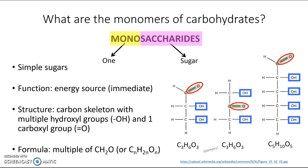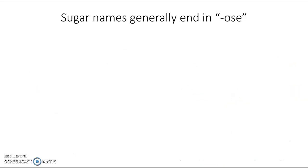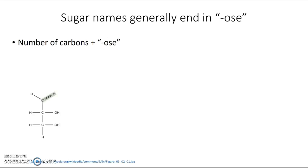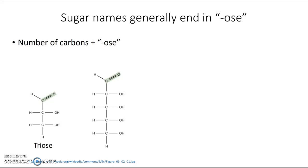Every molecule needs a name, not just a formula. Sugar names generally end in the suffix '-ose', and the system we use takes the Greek word root for the number of carbons and adds '-ose'. So a three-carbon sugar would be a triose, and a five-carbon sugar would be a pentose. But since we saw that isomers exist with the same formula, we're going to need to adjust the system and have different names for isomers.